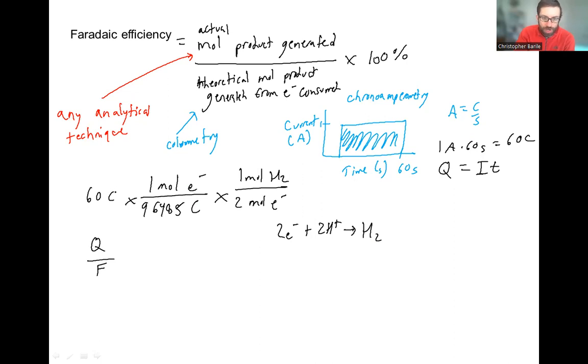So in this case, we need two moles of electrons goes to one mole hydrogen gas. So you can see we took the charge, we divide by Faraday's constant, then we divide by n, the stoichiometry of the reaction, or sometimes people will put this as z. So z is number of electrons per mole product generated that we care about.